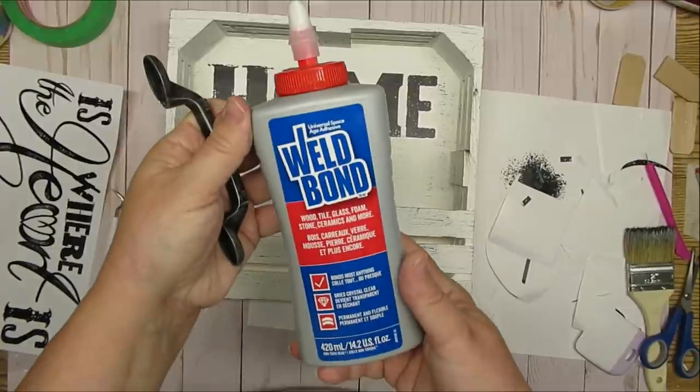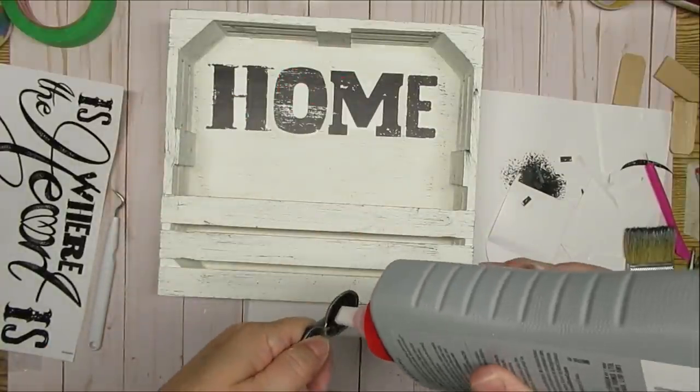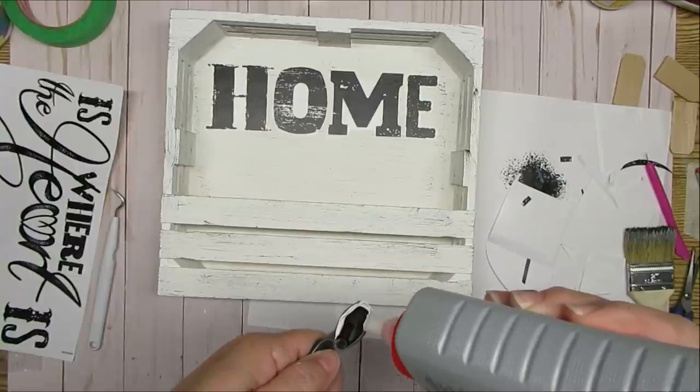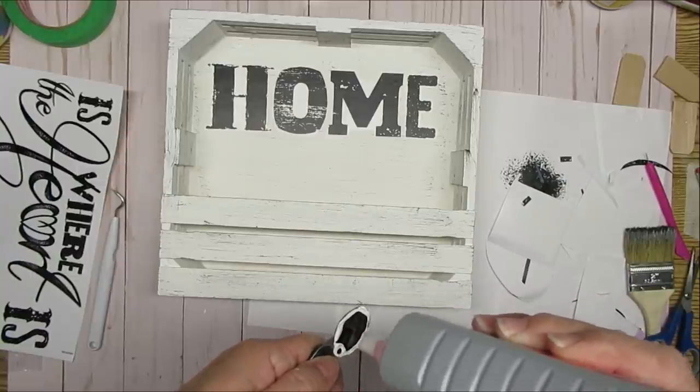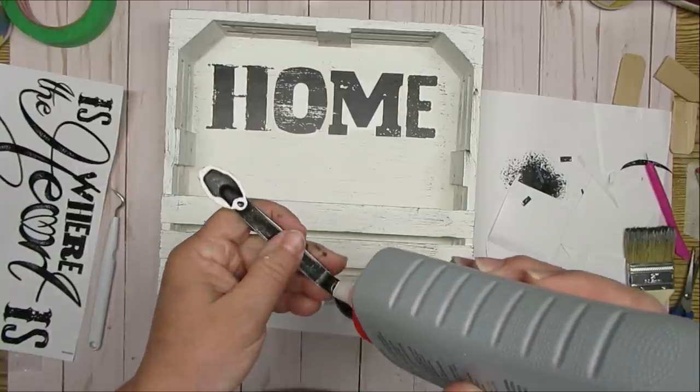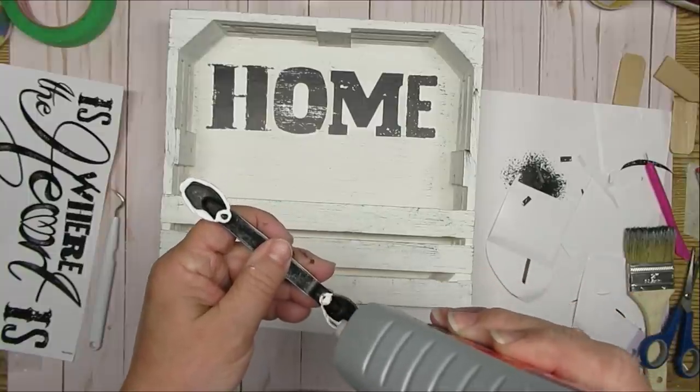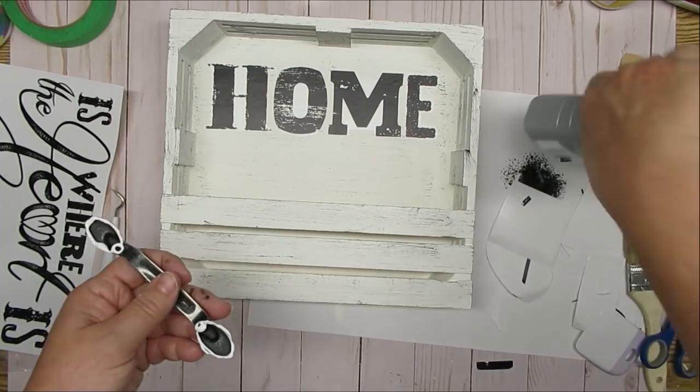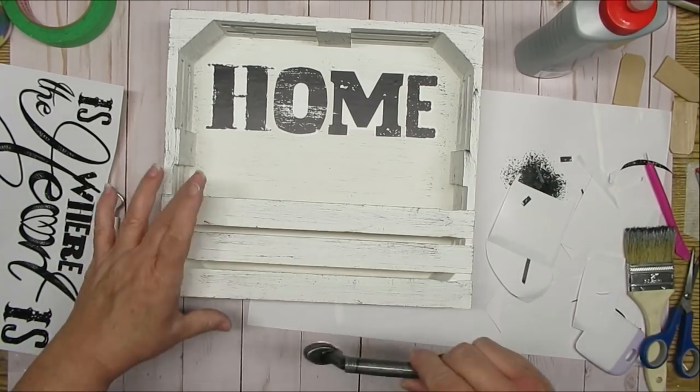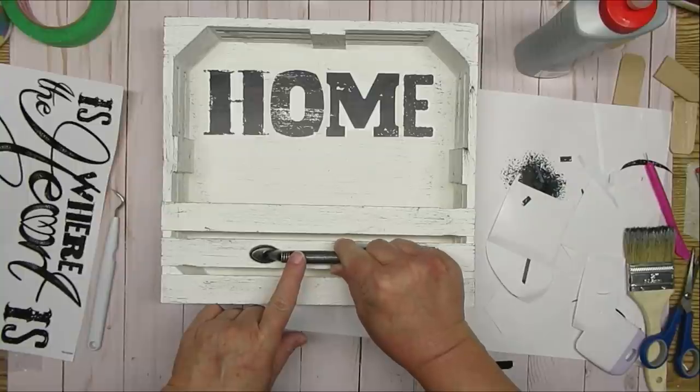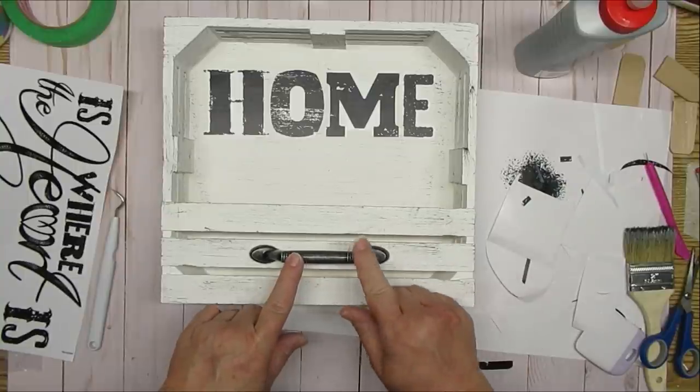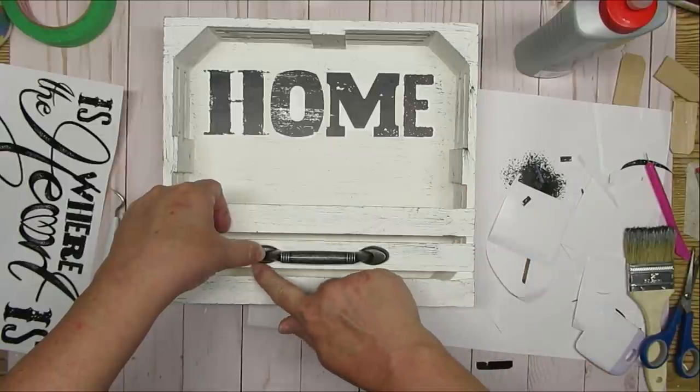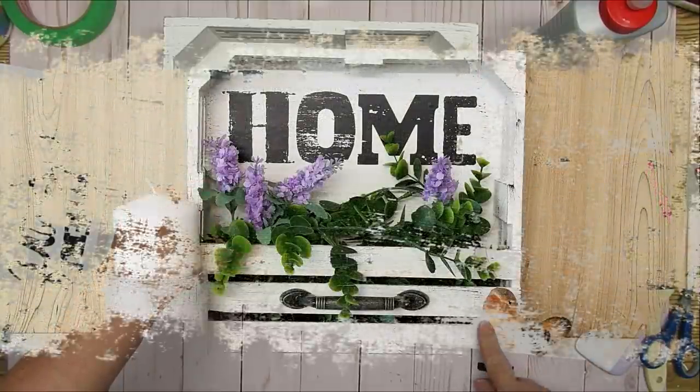To add a little bit more character, I'm going to glue on this handle using weld bond glue. It is my absolute favorite glue to use on wood, metal, ceramic, glass. It holds all sorts of different materials together and it's perfect. And it dries within about 10 minutes so you could continue working on your project. It does take about 24 hours to cure completely. I love how this turned out and I hope you like it too.